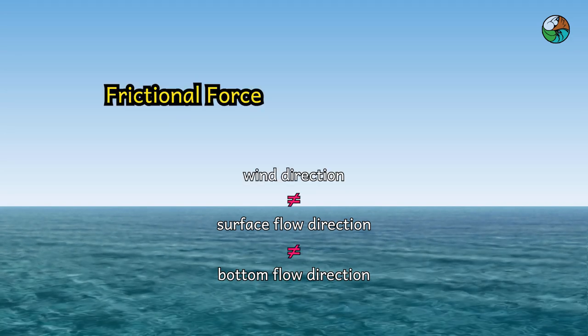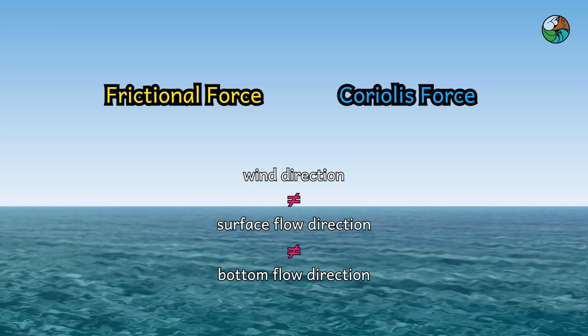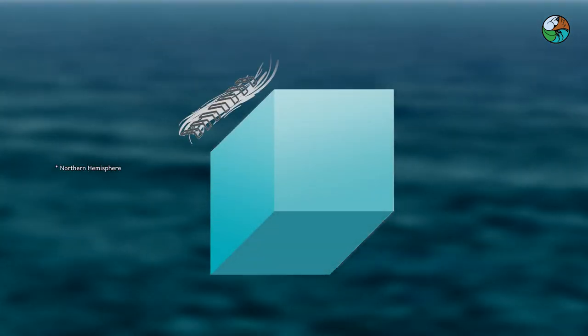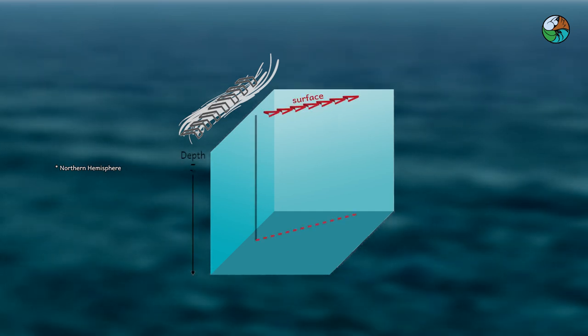This is due to the frictional force and Coriolis force. In the Northern Hemisphere, when wind blows across the surface at a certain direction, the surface layer of the ocean flows at an angle of about 45 degrees to the right.